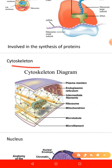The cytoskeleton is made up of microtubules, intermediate filaments, and microfilaments. It is a complex network of structures of various sizes found within the cytoplasm. It determines the shape of the cell and gives structural support to the cell.